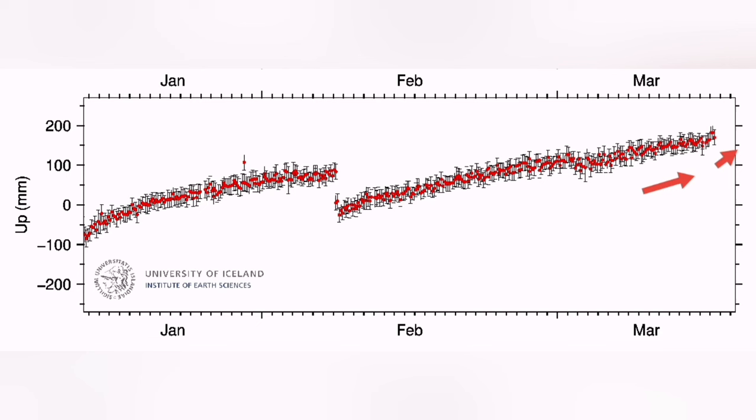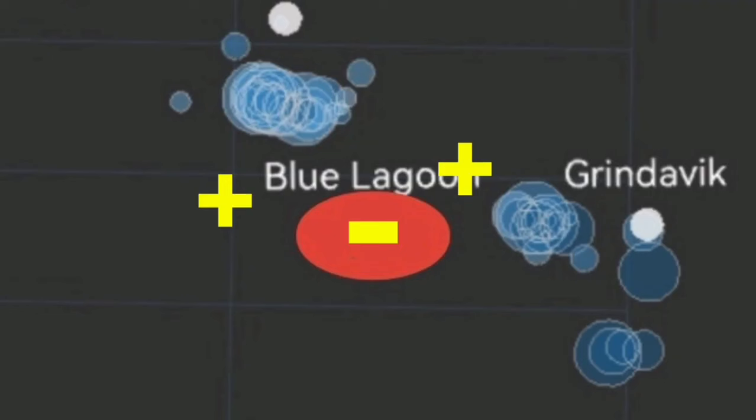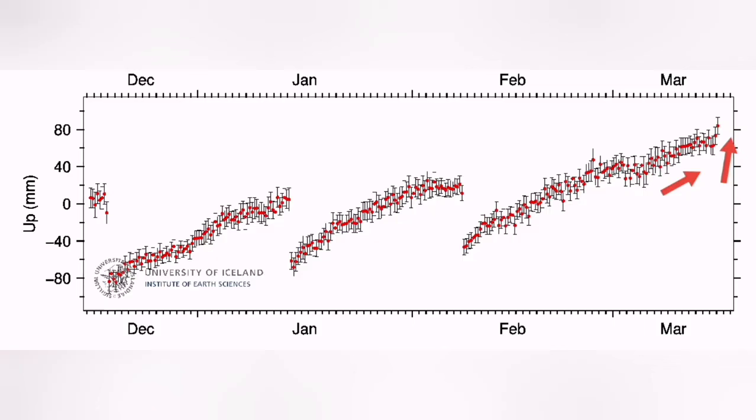Toward the east, I will show you now, is the Thorbjorn, and you can see that we have a slight uplift. Magma is going toward there, flowing toward there.